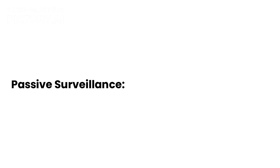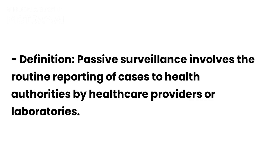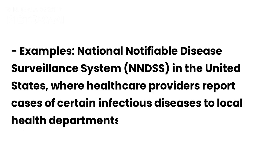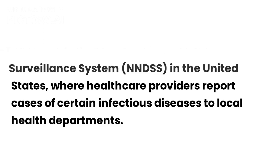Types of Surveillance. 1. Passive Surveillance. Definition: Passive surveillance involves the routine reporting of cases to health authorities by healthcare providers or laboratories. Example: the National Notifiable Disease Surveillance System (NNDSS) in the United States, where healthcare providers report cases of certain infectious diseases to local health departments.